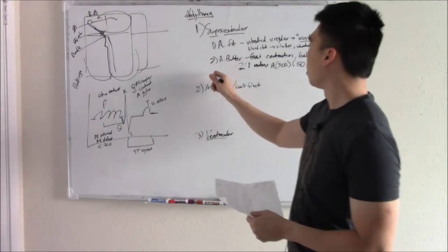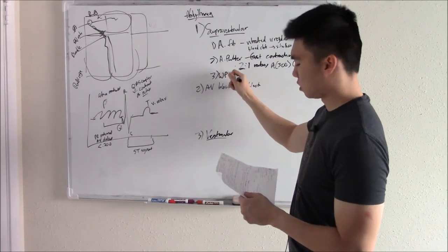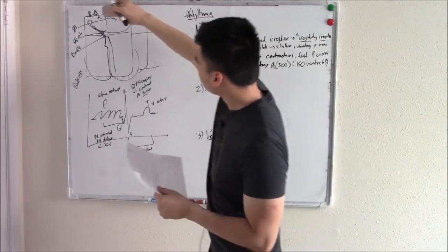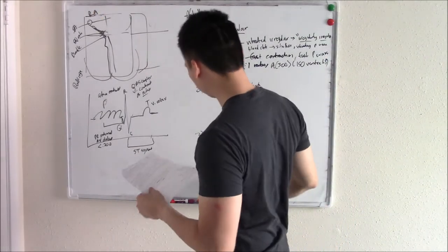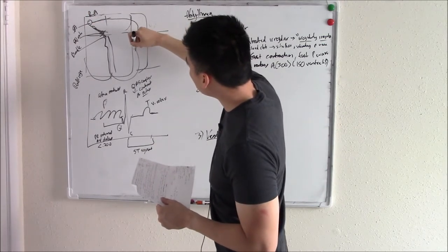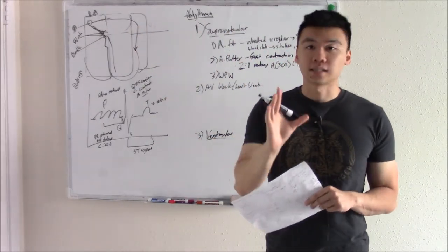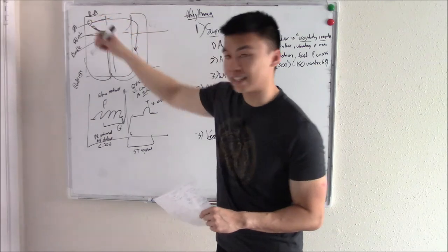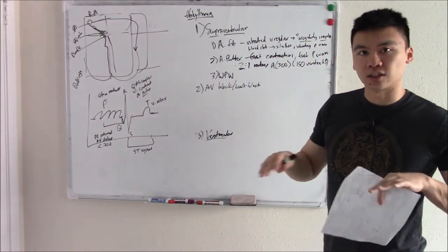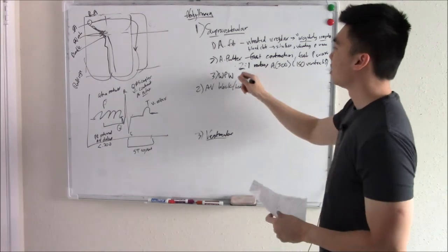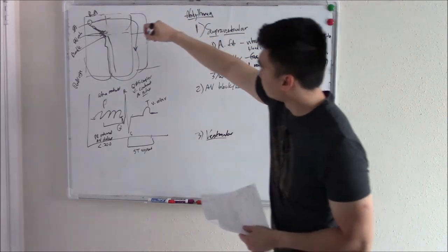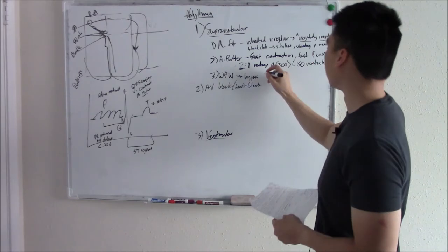Our last supraventricular arrhythmia is Wolf-Parkinson-White. It can involve re-entry, but it can also have a bundle of fiber that leaves and connects directly to the Purkinje fibers — bypassing the AV node gatekeeper entirely. That means both atria and ventricles are contracting really fast and uncontrolled. This bypass fiber is called the bundle of Kent.